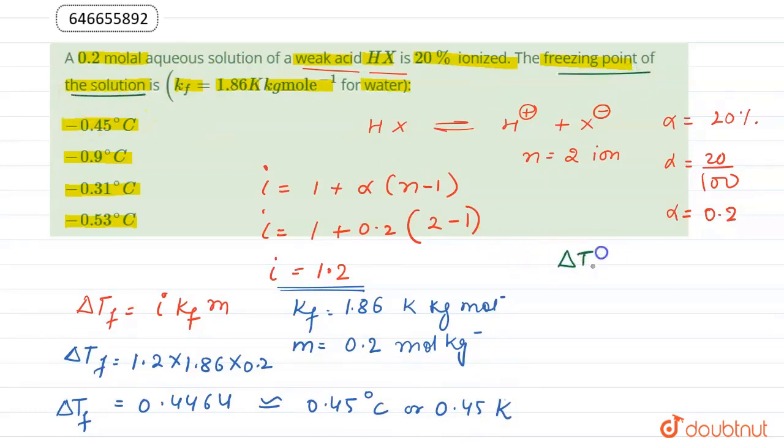Now the freezing point of solution can be calculated as delta Tf is equal to Tf minus Tf dash, where Tf is freezing point for pure water and Tf dash for solution. So here Tf dash is equal to Tf minus delta Tf. Freezing point of water is 0 degree centigrade minus delta Tf is equal to 0.45 degree centigrade.